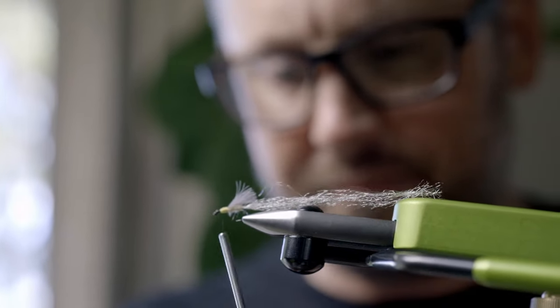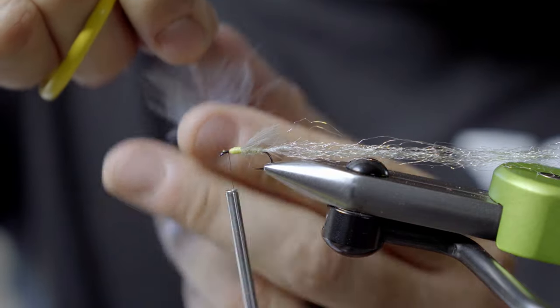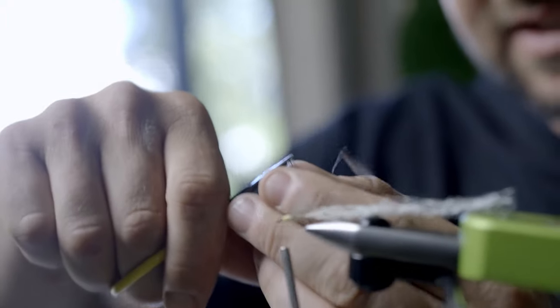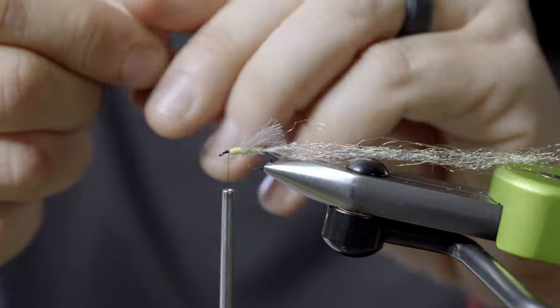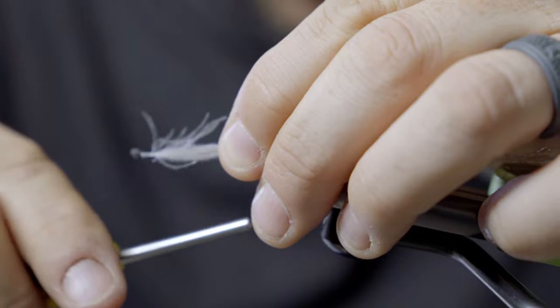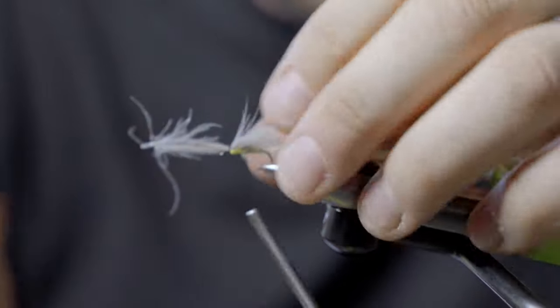Then I'm going to take another CDC feather. And with this one, it's a little bigger, so what I do is I go in here and I cut that tip off. Then I take the rest of it, pull it forward, set it right on top, give it just another layer.